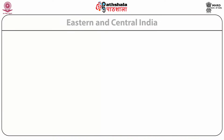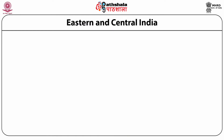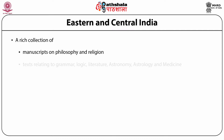Nalanda University — its name is derived from a Sanskrit term for 'giver of knowledge.' It grew to be the foremost Buddhist monastery and an educational center. It had disciples like Heonsang and Ising, and the library was huge. It was in three parts: Ratnasagar, a nine-story building; the second was called Ratna Dodhi; and the third, Ratna Ranjika. Nalanda Library had a rich collection of manuscripts on philosophy and religion, texts relating to grammar, logic, literature, astronomy, astrology and medicine.